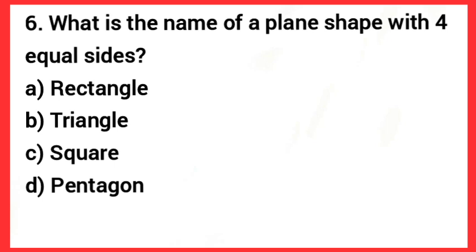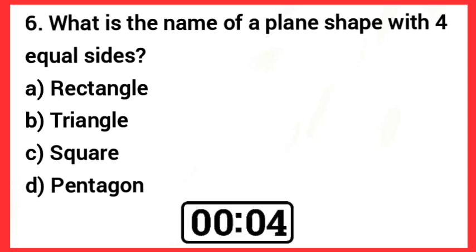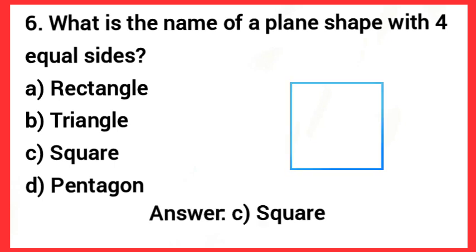Next one, what is the name of a plane shape with 4 equal sides? Answer: Option C, Square.